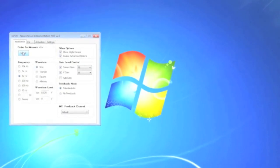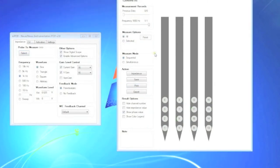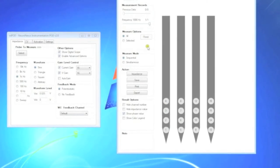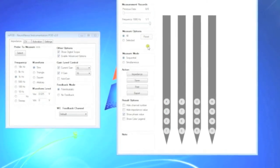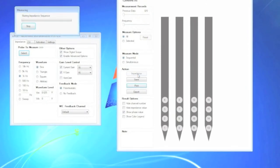For an impedance scan, you can select only the sites you want to measure, or measure all the sites, in either simultaneous or sequential mode. We recommend measurements in sequential mode, as while simultaneous mode is quicker, it may be less accurate. Press the impedance button to run the scan.